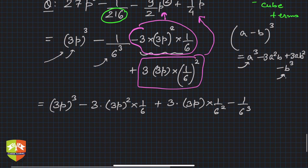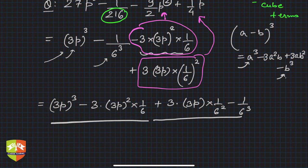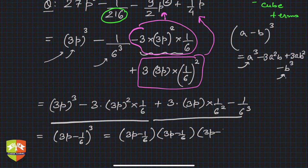And you know that this is nothing but cube of a binomial. What binomial? This is (3p - 1/6)³, which is now equal to (3p - 1/6) × (3p - 1/6) × (3p - 1/6).